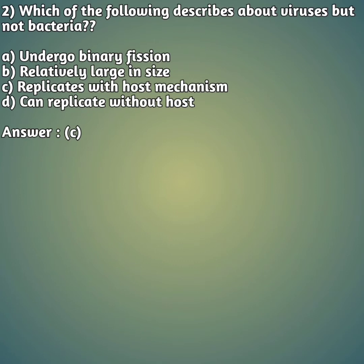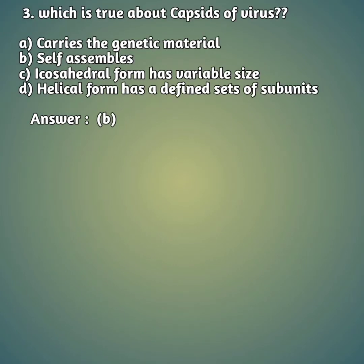Third question: which is true about capsids of a virus? Option A: carries the genetic material. Option B: self-assembled. Option C: icosahedral form has variable size. Option D: helical form has a defined set of subunits. The correct answer is option B — capsids are self-assembled.